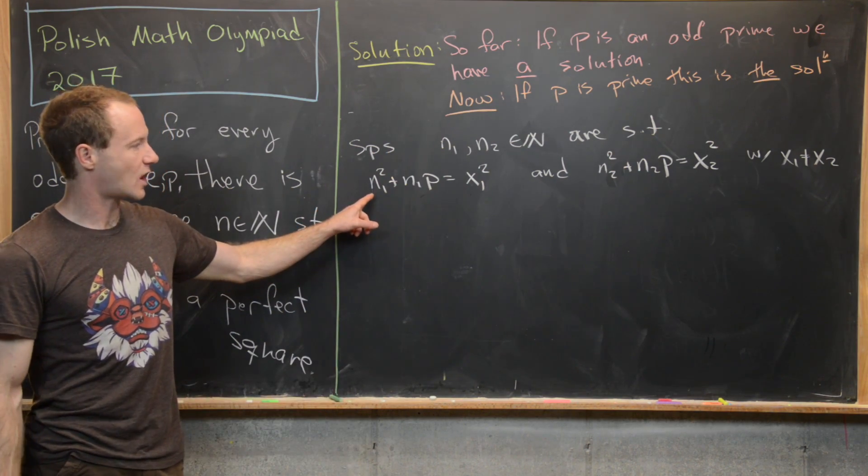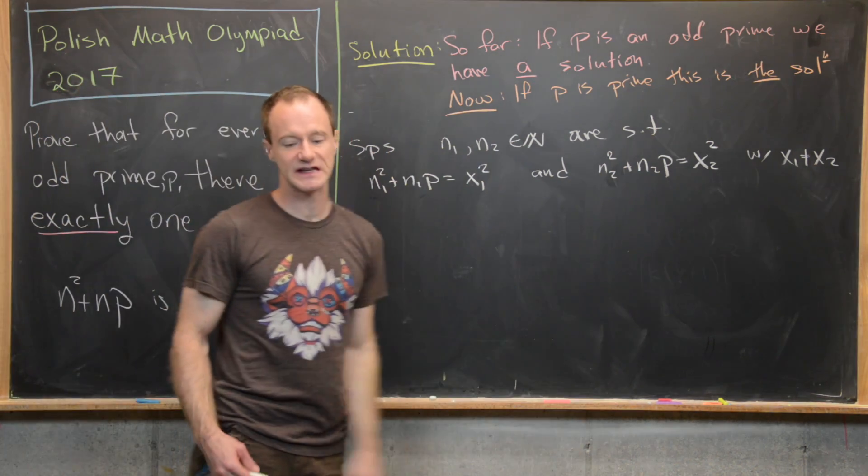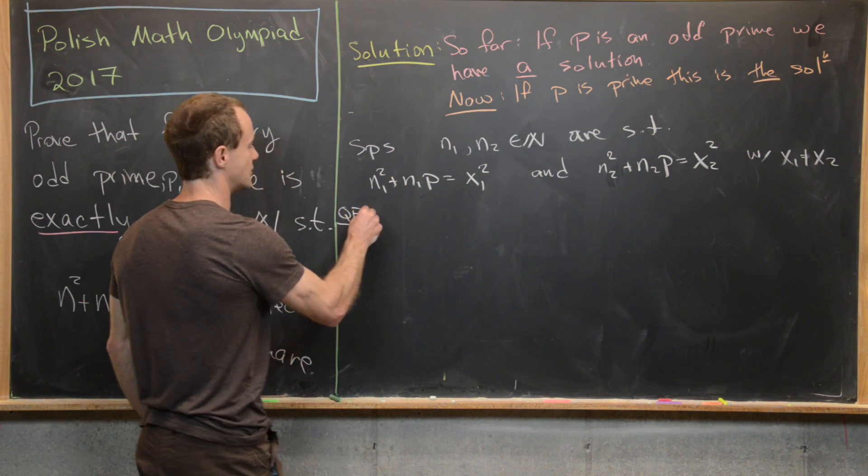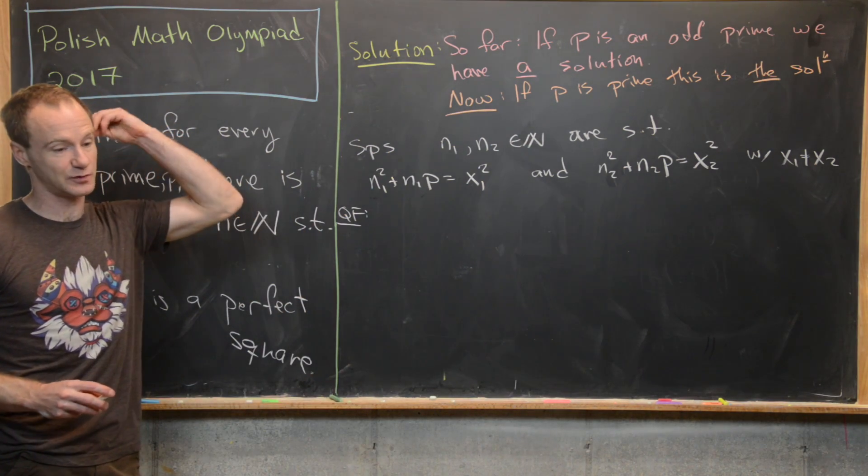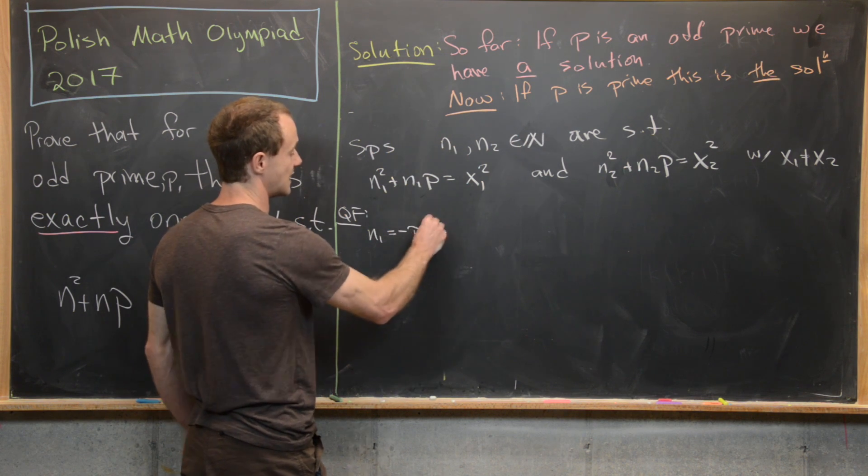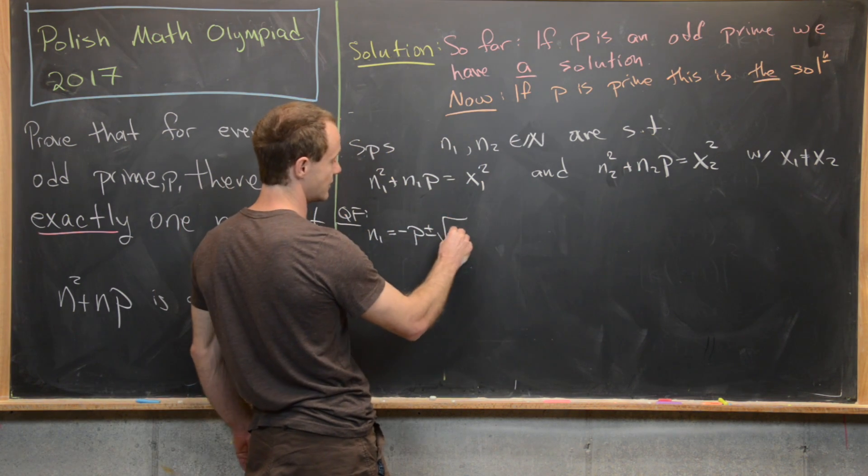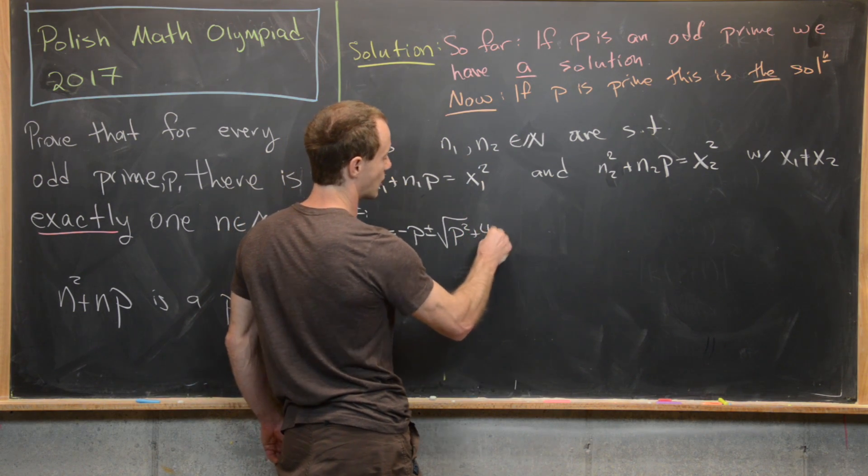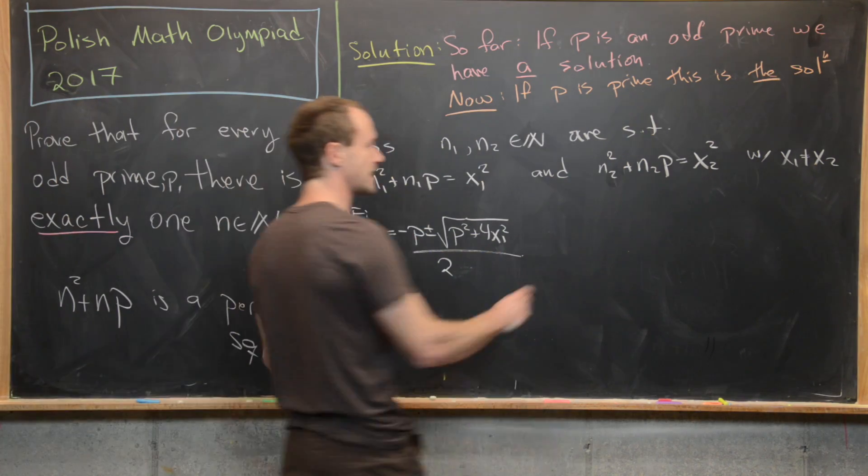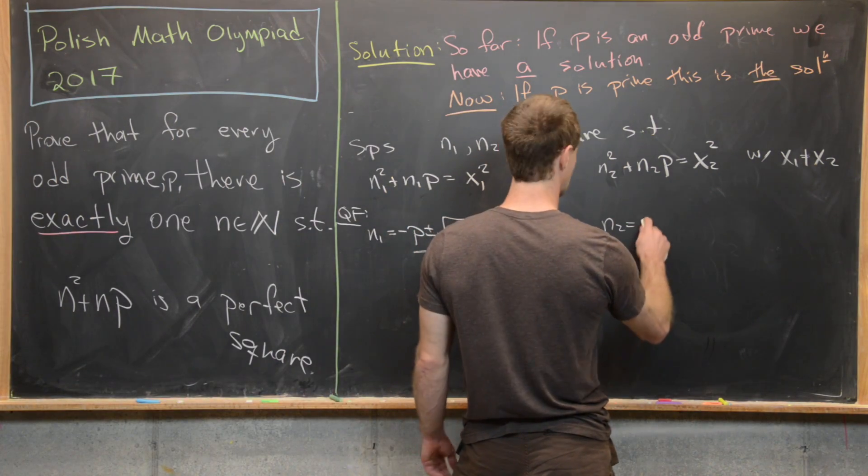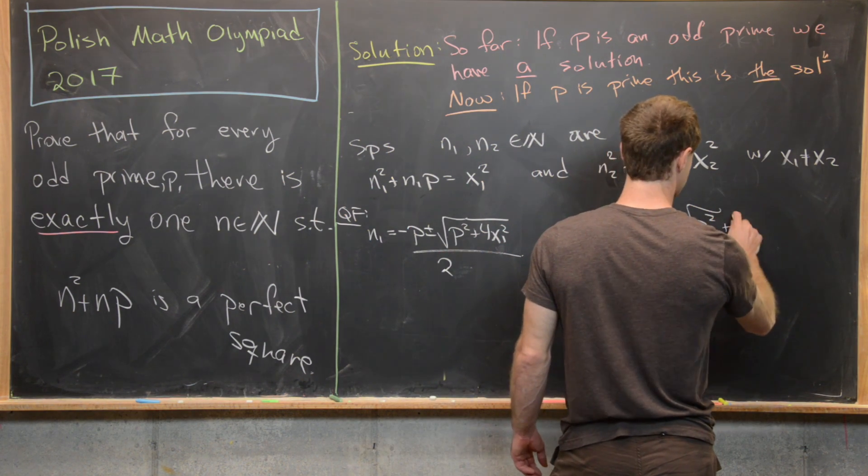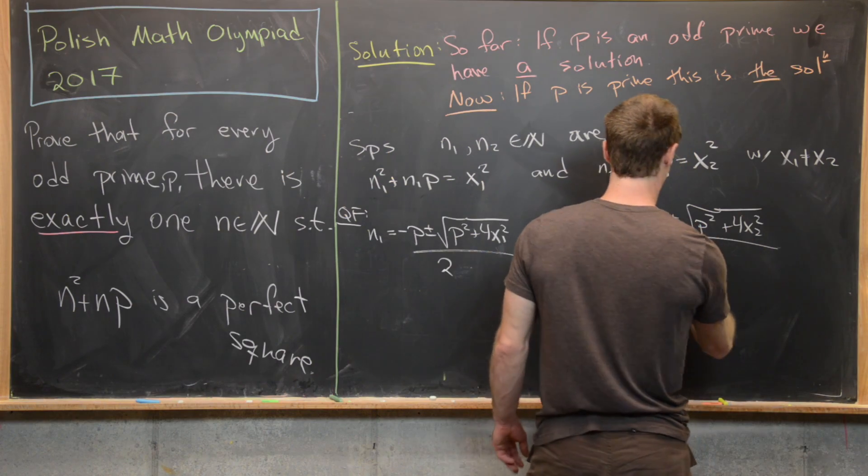Now what I want to do is maybe use the quadratic formula to solve each of these for n and let's see what we get. So I'm just going to jump through the steps of doing this—we don't really need to check that super carefully. So up here we'll have n one equals negative p plus minus the square root of p squared plus four x one squared all over two. And then similarly over here, we'll have n two equals negative p plus minus the square root of p squared plus four x two squared all over two. Great.